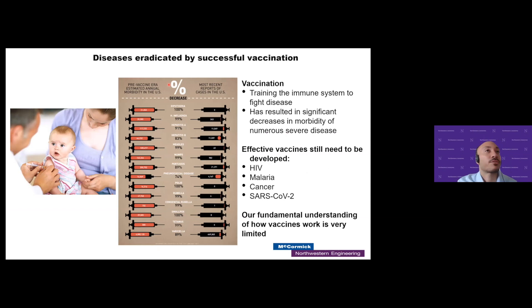Vaccines are extremely effective at what they do. Shown here are just some of the effective vaccines that have eradicated several very terrible diseases throughout history. What a vaccine really is is training the immune system to fight a disease. Typically this is thought of in terms of infectious disease, but it can also be used to target cancer. There's a lot of research going on now on how you can target the immune system towards cancer, just like it can be used to target virus-infected cells.